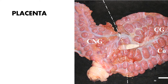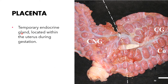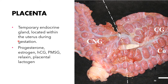The placenta is a temporary endocrine gland located within the uterus during gestation. It produces the following hormones: progesterone, estrogen, human chorionic gonadotropin (HCG), pregnant mare serum gonadotropin (PMSG), relaxin, and placental lactogen. Progesterone and estrogen are classified as steroid hormones, HCG and PMSG as glycoprotein hormones, and relaxin and placental lactogen as polypeptide hormones. The photograph shows the bovine placenta at 125 days of gestation.